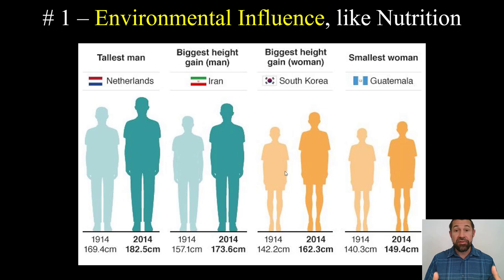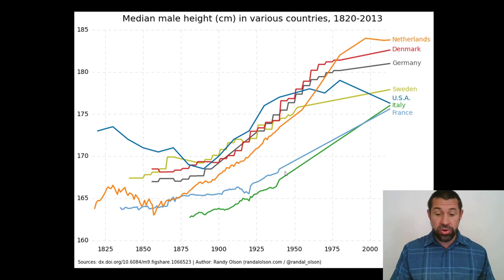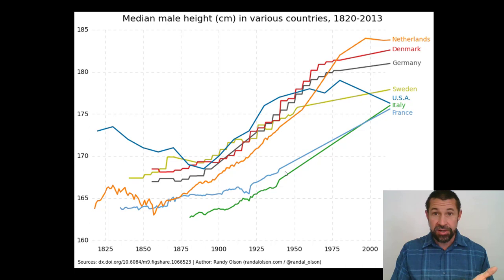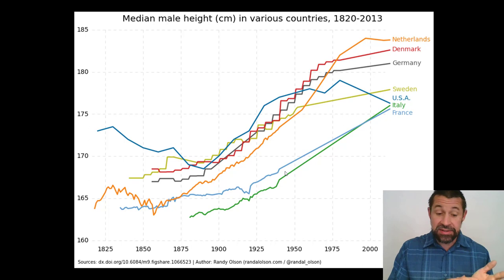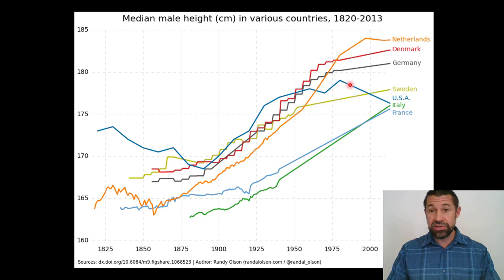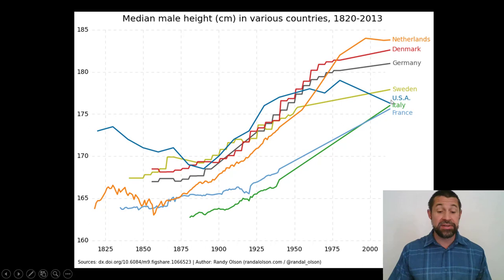Here's another way to represent those height data, with all these western countries exhibiting increasing median male height over the past 100 years. If you look closely, there's only one anomaly: since the late 1970s, the wealthiest country in the world has actually seen declines in male heights. You see the USA here — actually declining since the late 1970s. Researchers point to two possible drivers for this trend.